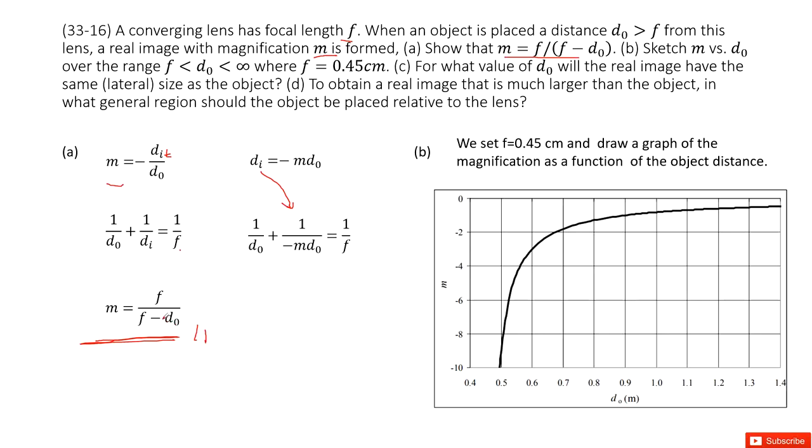So first of all, we need to make sure the d₀, the minimum should be 0.45, right? This one.